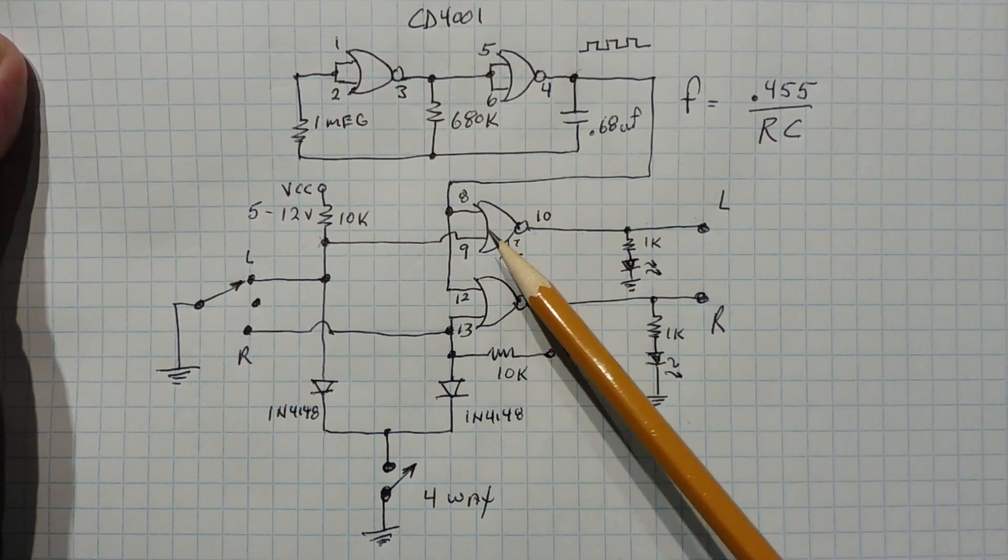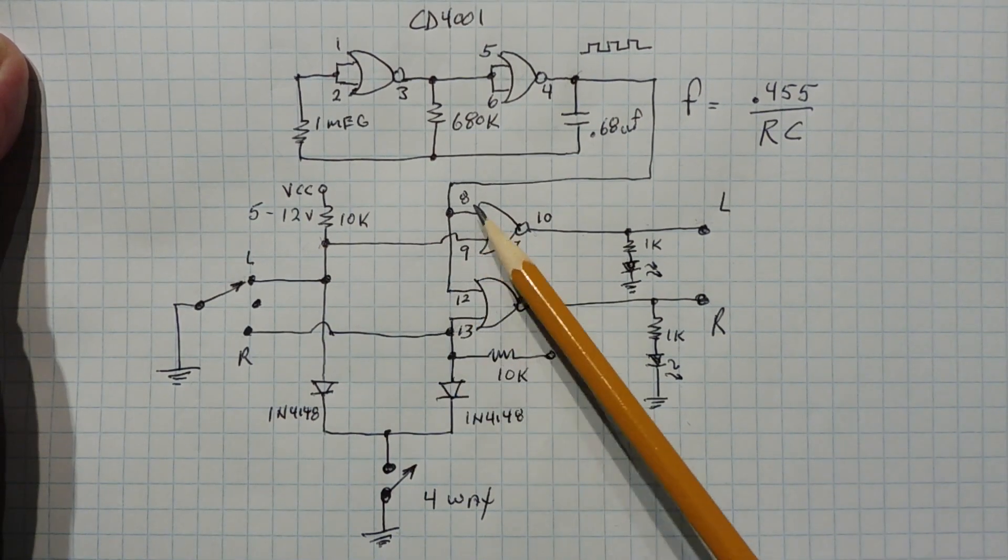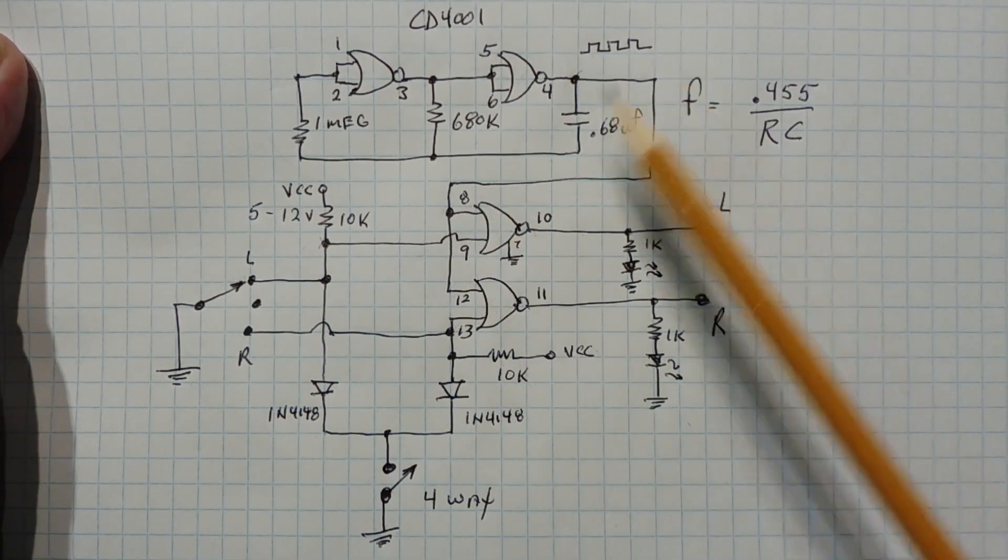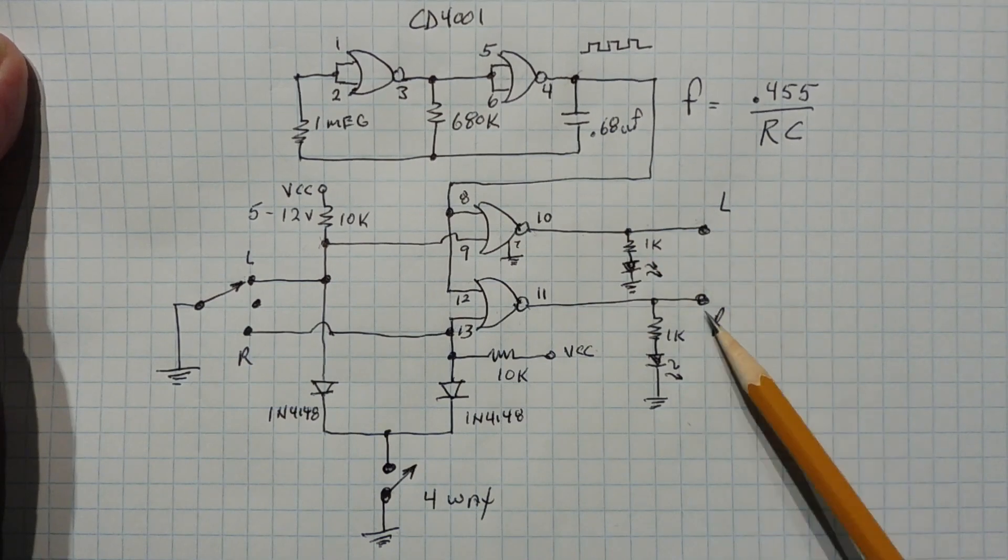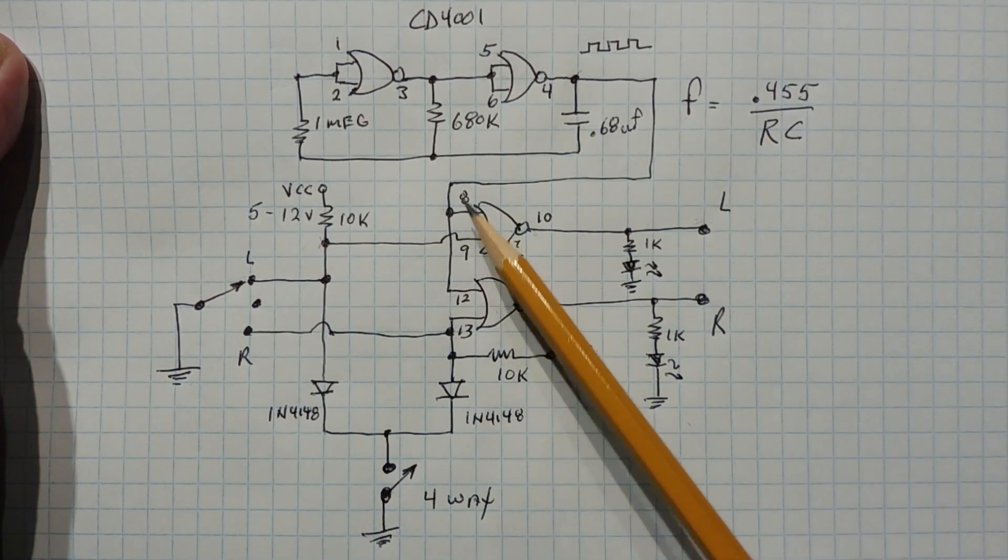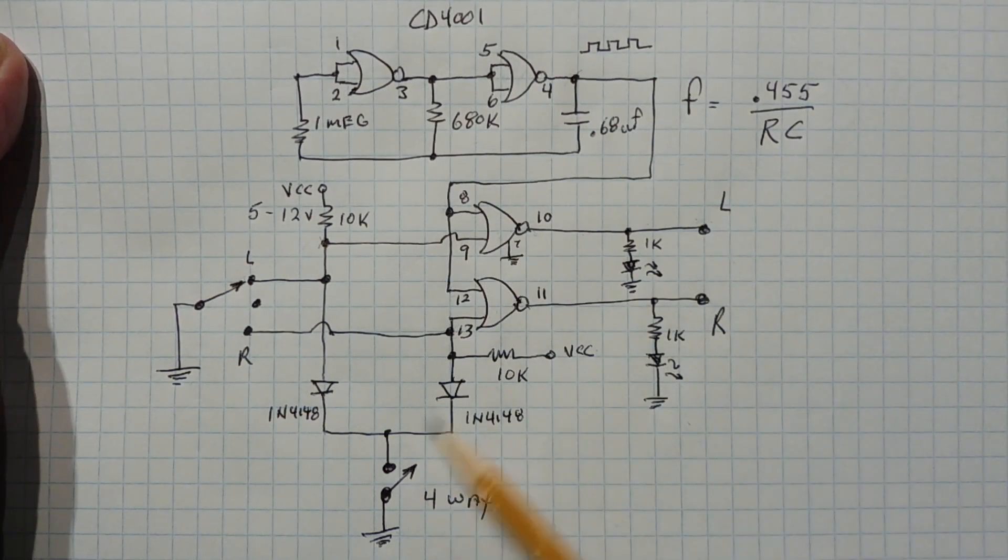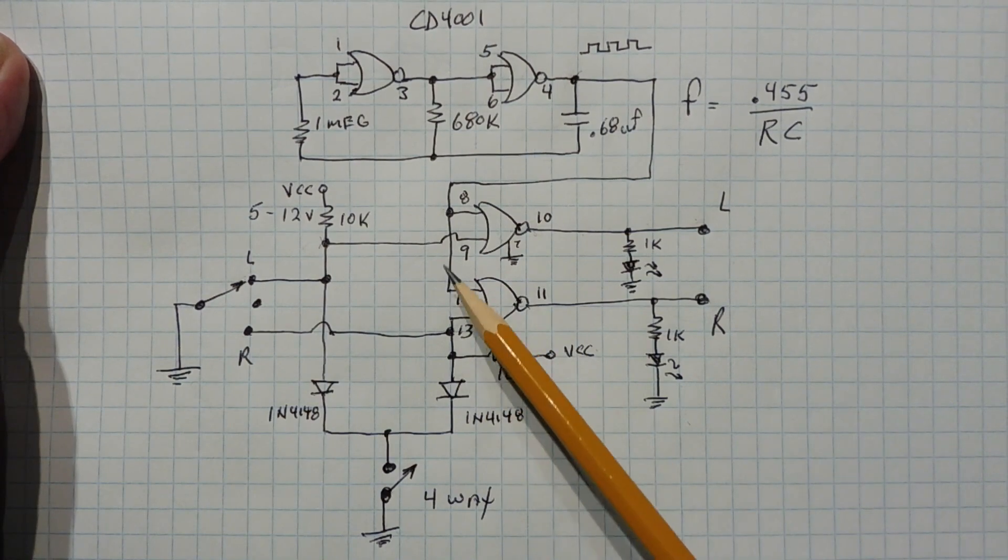So we have one Hertz signal fed into one of the pins of each of the NOR gates, and the other pin, pin 9 and pin 13, are pulled high by pull-up resistors which disable the frequency, the flasher frequency, from getting into the left or right output drives. But if we ground pin 9, then it will enable the flashing frequency to go out the left to drive the left bulbs. And if we ground pin 13, that enables the flashing clock to drive the right bulbs.